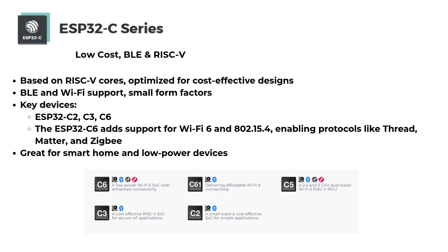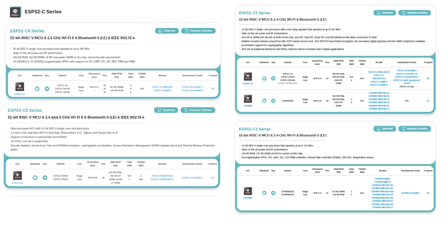The ESP32-C series is based on RISC-V cores, optimized for cost-effective design, BLE and Wi-Fi support, and small form factors. Key devices include the ESP32-C2, C3, C5 and C6. The ESP32-C6 adds support for Wi-Fi 6 and 802.15.4, enabling protocols like Thread, Matter and Zigbee. Great for smart home and low-power devices.